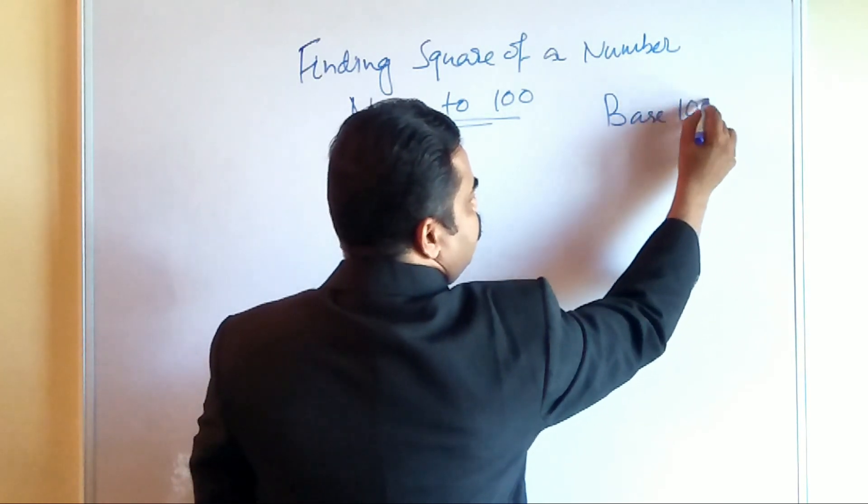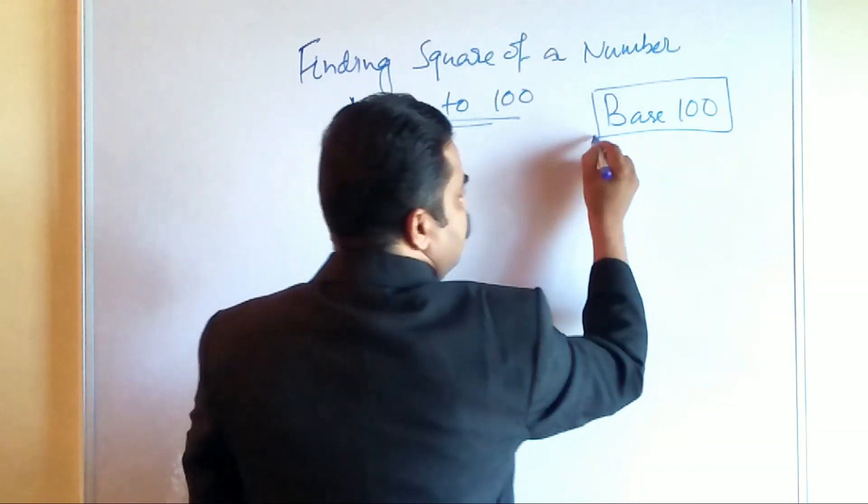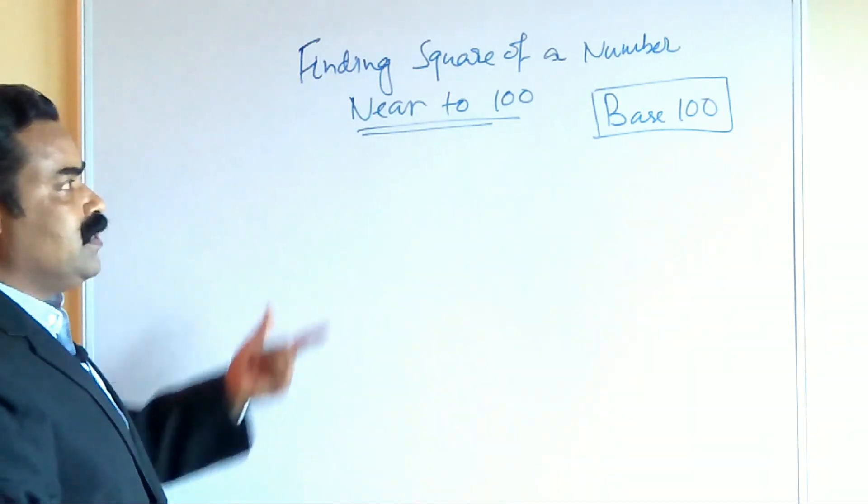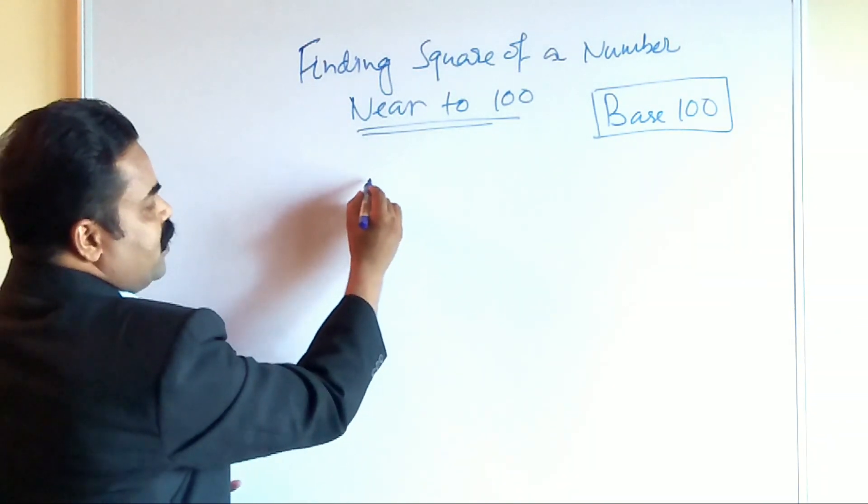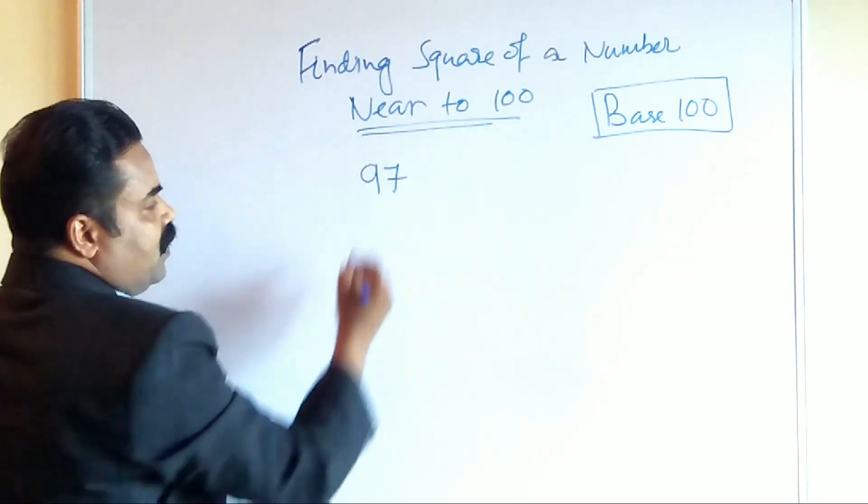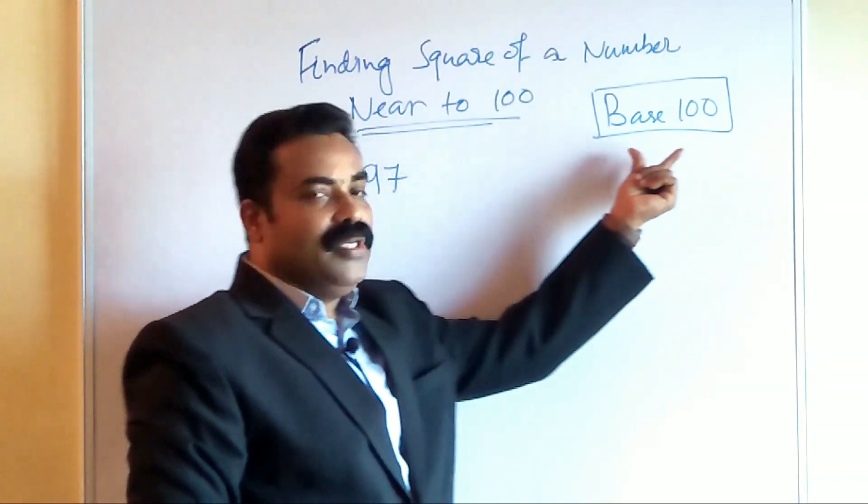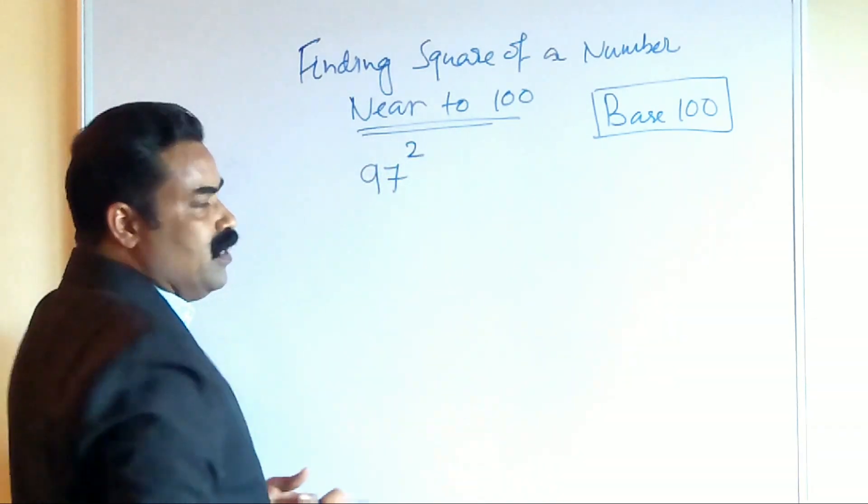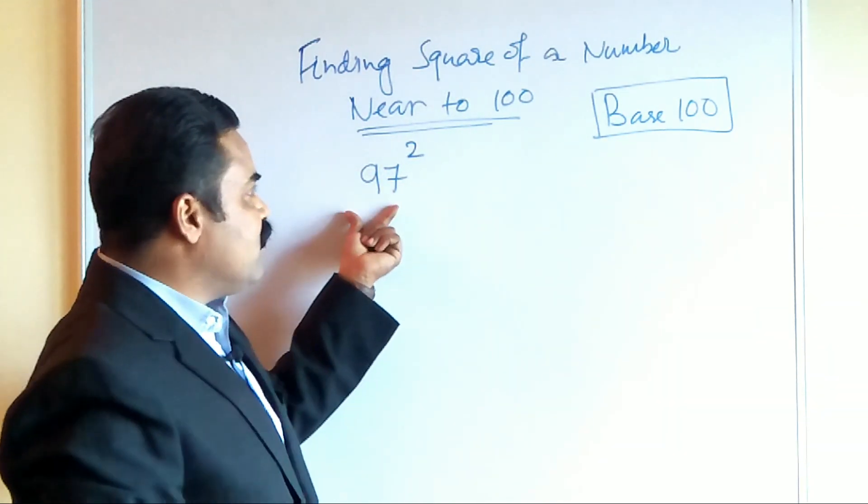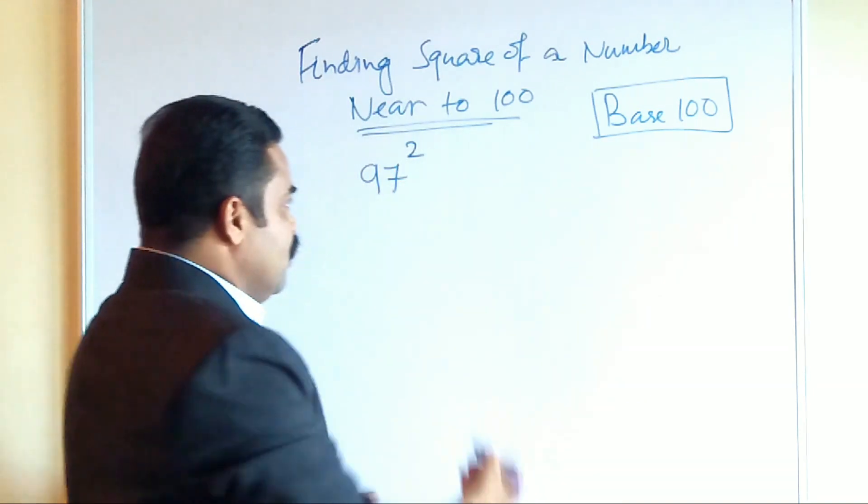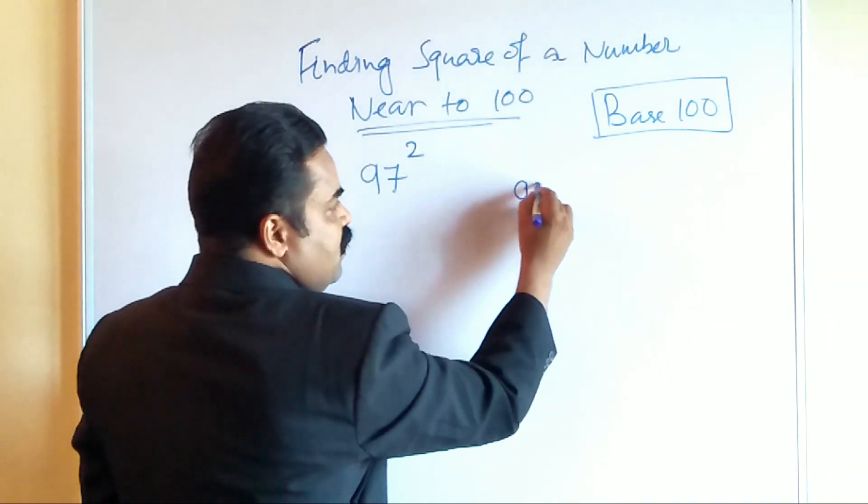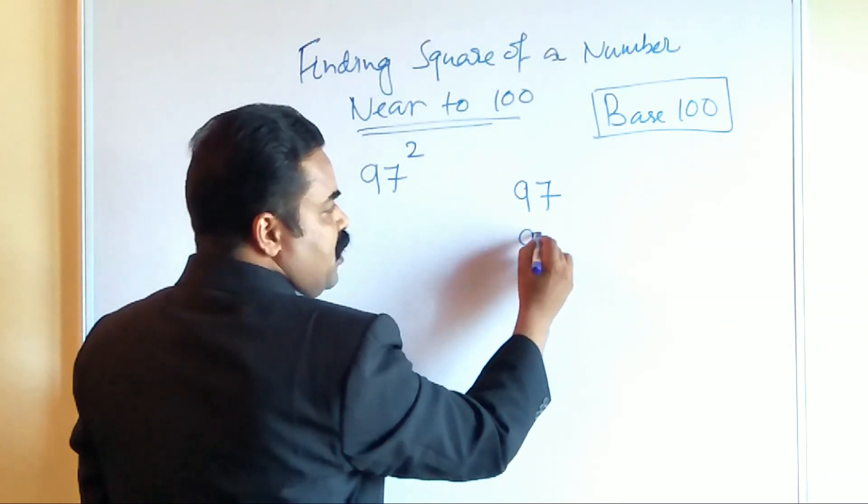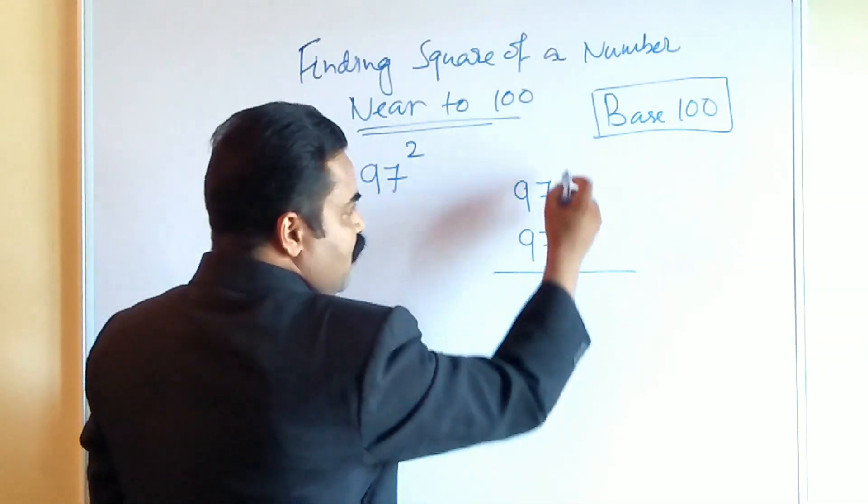Now let us take a number, for example 97. 97 is a number near to 100 and you want to find out the square of 97. What way we will find out the square of 97 by using speed math, Vedic mathematics? 97 square can be written as 97 multiplied by 97.